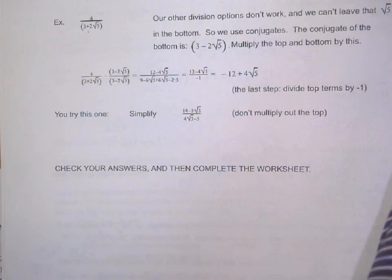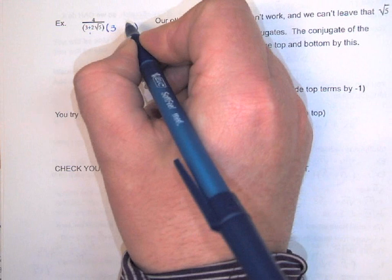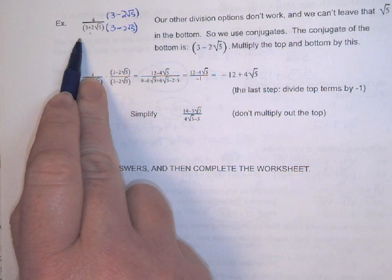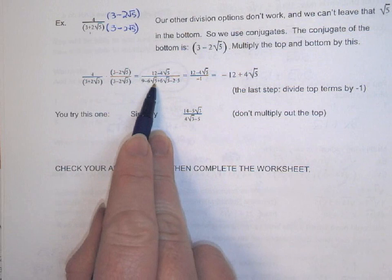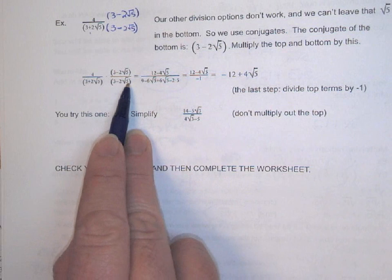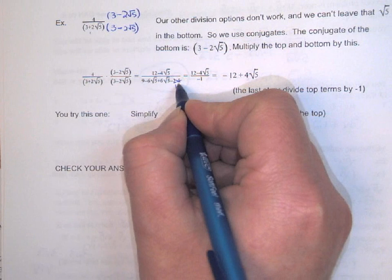For example, with a problem like this, our other division options don't work — as soon as we see a plus or minus sign, we have to use a conjugate. We look at this denominator: 3 plus 2 square root of 5. Multiply the bottom by the conjugate — everything stays the same but the addition becomes subtraction. I'll also multiply the top, but deal with that later. Distributing the bottom: 3 times 3 is 9. 3 times negative 2 square root of 5 is negative 6 square root of 5. 2 square root of 5 times 3 is positive 6 square root of 5. 2 square root of 5 times square root of 5: the 2 stays, square root of 5 times square root of 5 is 5, giving 2 times 5 equals 10.